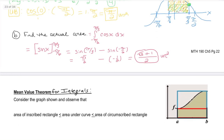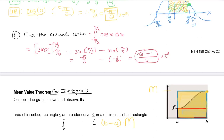We can have this circumscribed rectangle, so the actual area under the curve can be bounded above by this upper bound. Let's call this value capital M — the upper bound. The area of this circumscribed rectangle is its width, B minus A, times its height, capital M. That is an upper bound on the definite integral from A to B of f of x dx.